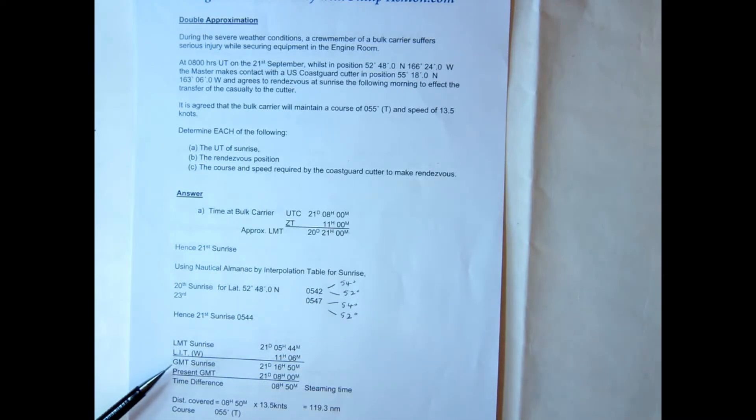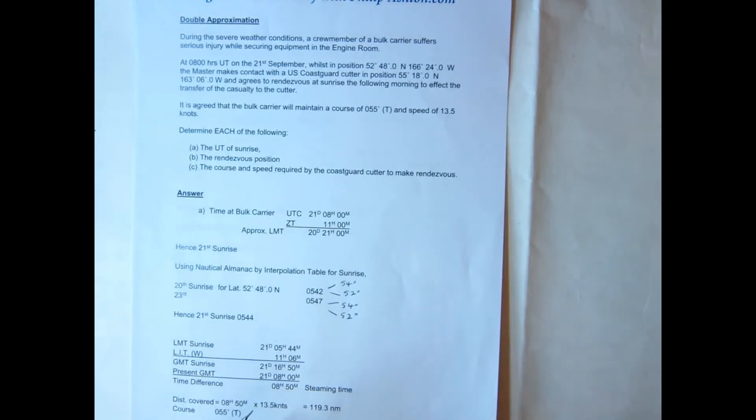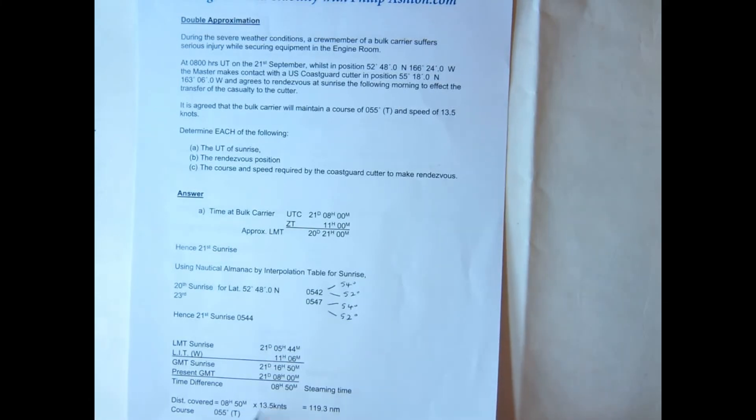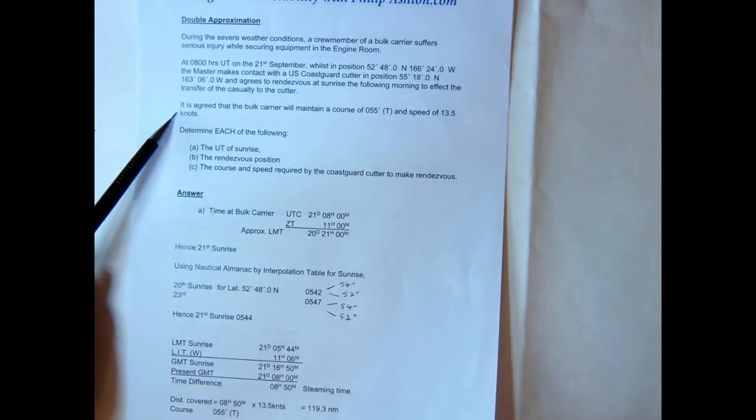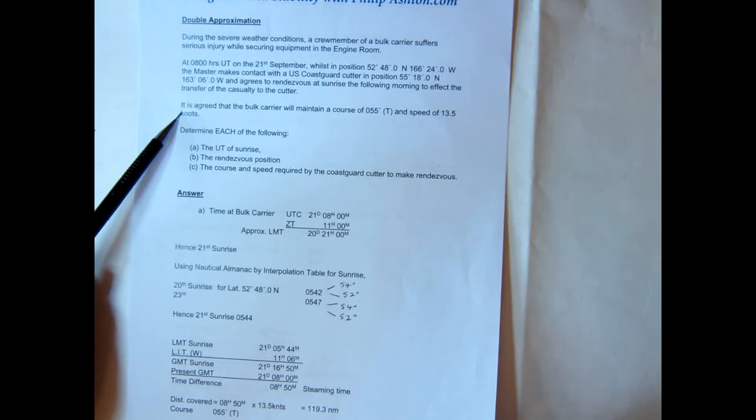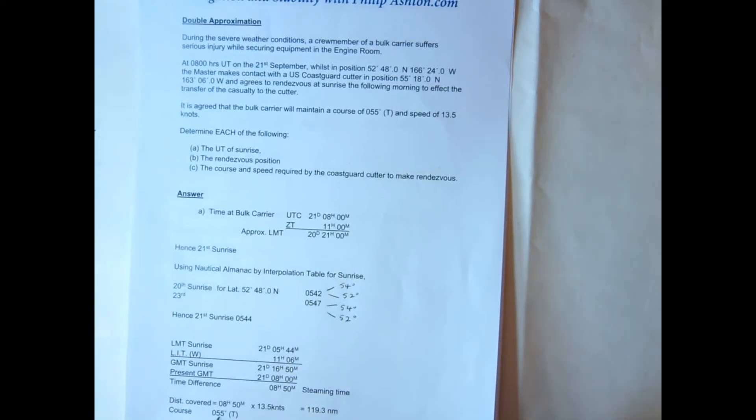Let's now convert it to universal or GMT, because what we have to do is work out the steaming time. And because we're given the time here as universal or GMT, then we have to convert our sunrise to GMT to get the steaming time. And we see there we have a time difference of 8 hours 50 minutes. Multiply that by the speed 13.5 knots and we have a distance covered 119.3, and it's the bulk carrier of course we're going to use because we're given their course and speed.